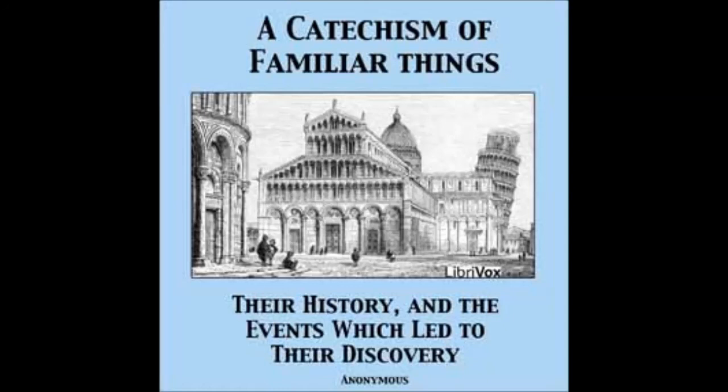The most eminent master of the art was Michelangelo, born in 1474, who was also a painter and architect. From his time to the latter end of the last century, sculpture again gradually declined, but under Canova, a native of Posagno in the Venetian Alps, it revived. He was born in 1757.